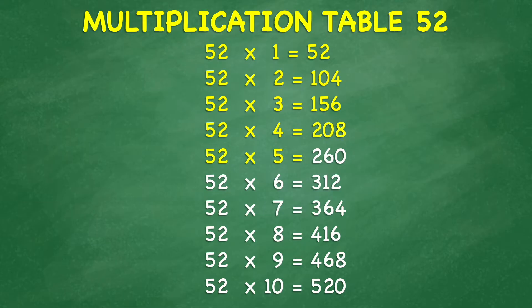52 times 5 equals 260. 52 times 6 equals 312. 52 times 7 equals 364. 52 times 8 equals 416. 52 times 9 equals 468. 52 times 10 equals 520.